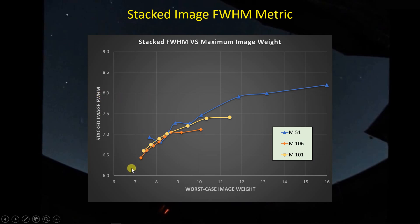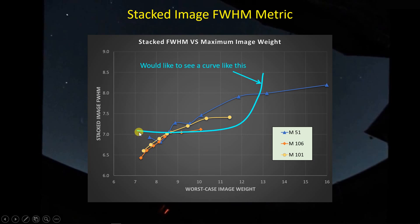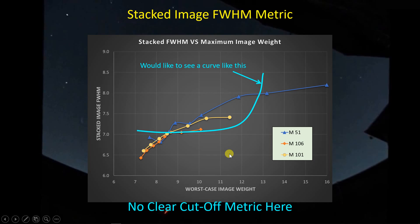What we're seeing is a tendency for the full width at half maximum to get a bit worse as we add more and more poorer quality images. Starting with only 35 images gives the best FWHM, but poor signal-to-noise ratio. Ideally I'd like to see a curve where image quality stays constant and then drops precipitously once we've added too many bad images - giving a clear cutoff point. But instead we just have this gradual degradation, so there's no clear cutoff metric here.